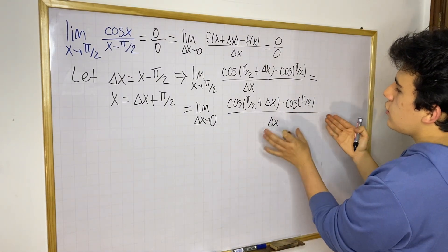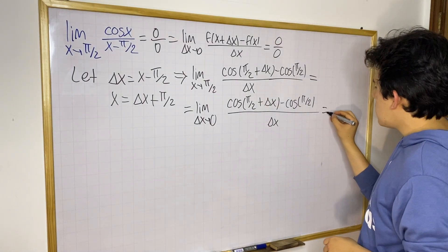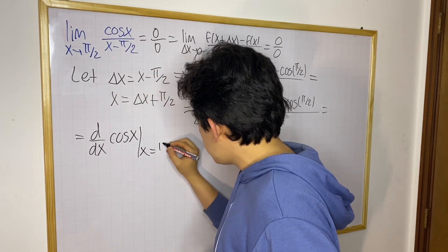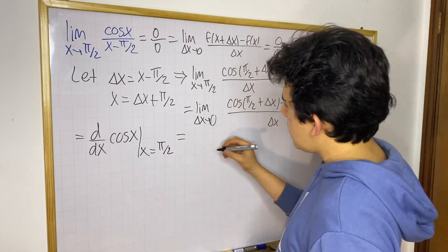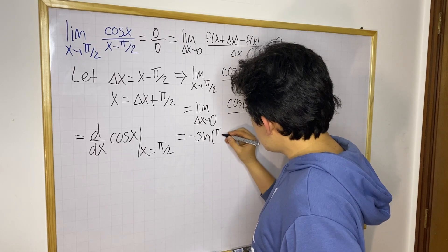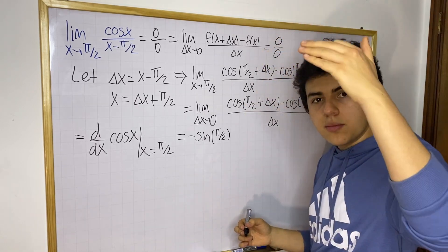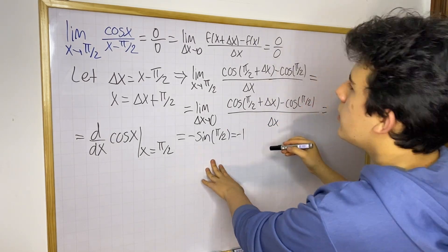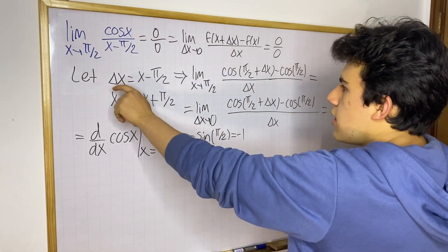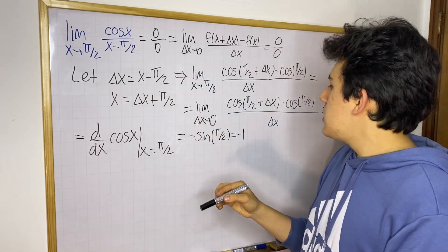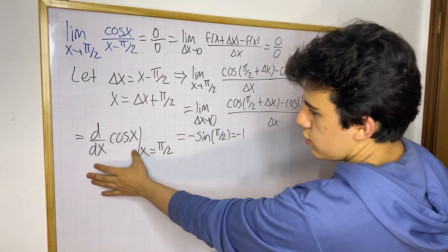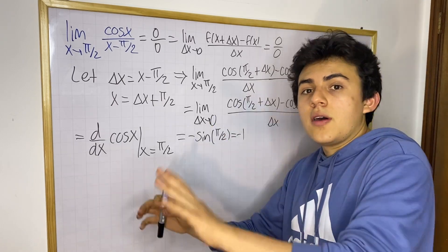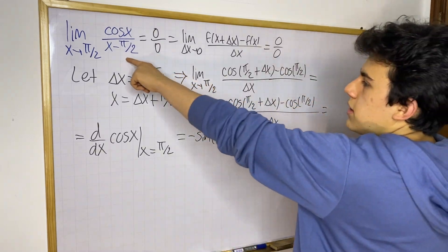Now you can see the resemblance with the difference quotient. This entire expression is equal to the derivative with respect to x of cosine x, evaluated at x equals pi over 2. That is minus sine of pi over 2. Sine of pi over 2 equals 1 — that is one of the maximums of the sine function. So you get negative 1. This limit is equal to negative 1, because all we did was change the notation — writing the same idea in different symbols.